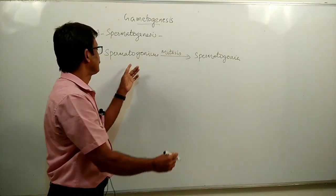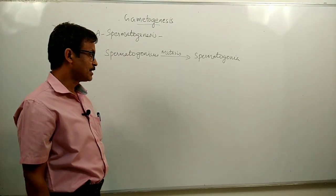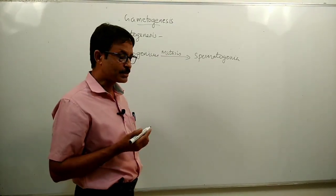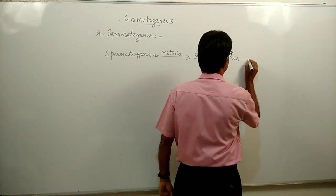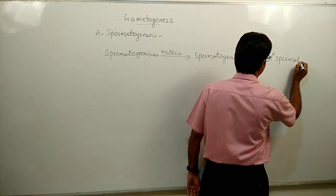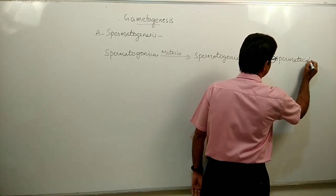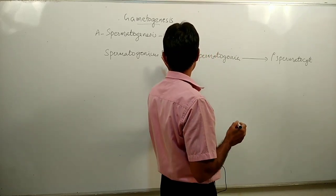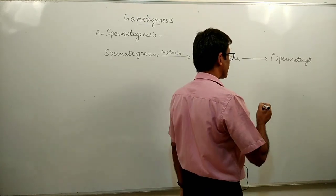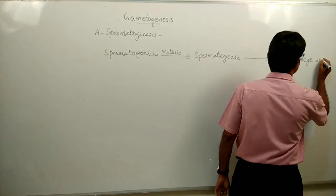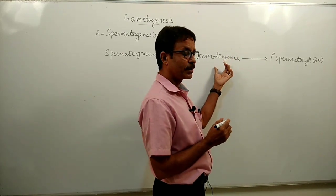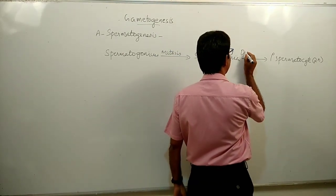Some of these spermatogonia stop division, absorb nutrients, and transform into primary spermatocytes. Primary spermatogonia are diploid cells possessing 2n number of chromosomes, and primary spermatocytes also possess 2n chromosomes. This primary spermatocyte is formed from spermatogonia by differentiation — there is no division here.